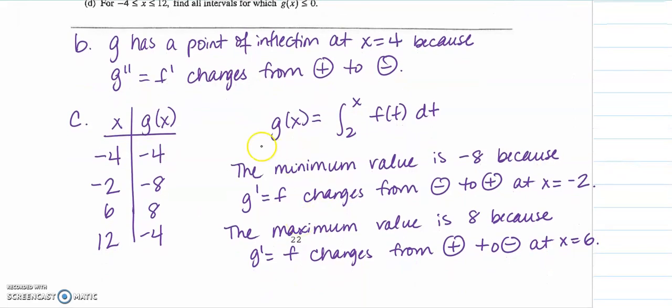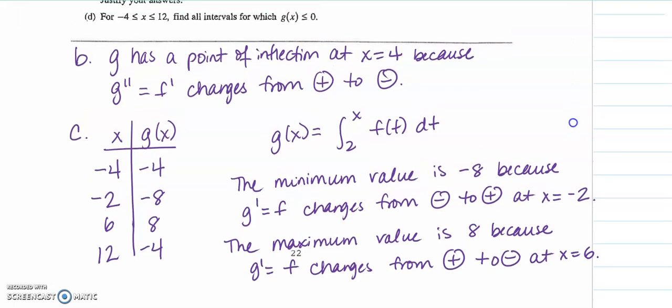These are the kind of problems that you could also have mins and maxes at endpoints, so you might want to take some time to review how you would justify endpoints. Part d: for all negative 4 to 12, find all intervals for which g is less than or equal to 0.